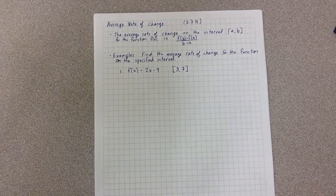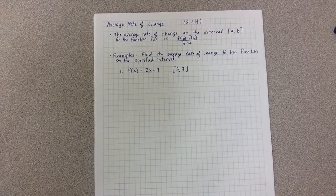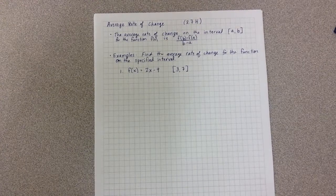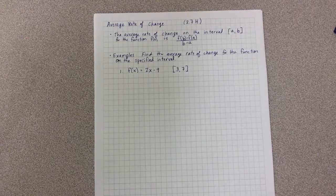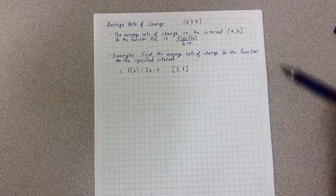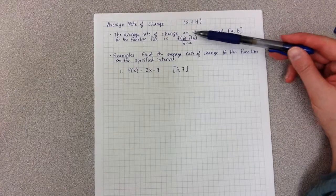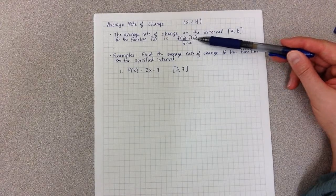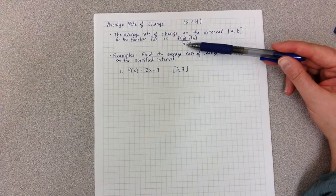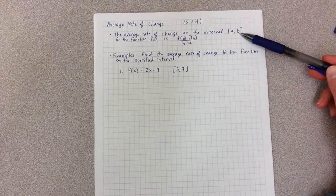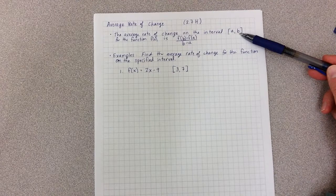It happens on a particular interval, so particular from one x value to a second x value. And we need a function in order to find that average rate of change. The formula for the average rate of change is f(b) minus f(a) all over b minus a, where b and a are the interval that I'm looking at, from a to b.